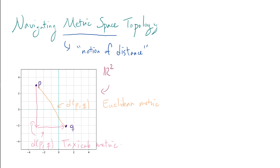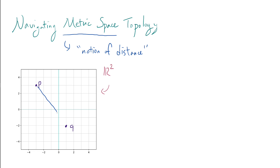Now, there are certainly more esoteric ways of defining distances. For example, you can say if the two points are not the same, then they are distance one apart. So P and Q are distance one apart, and no matter how far apart they are, let's just say everything is distance one apart. This somewhat silly metric would be an example of what's called a discrete metric.